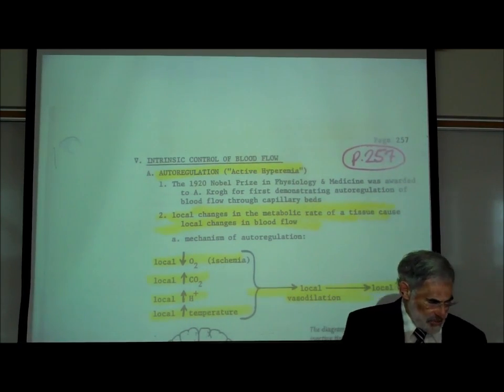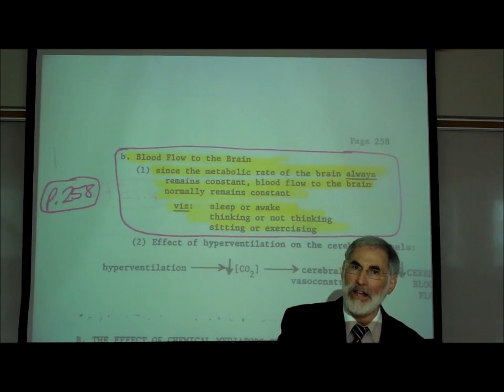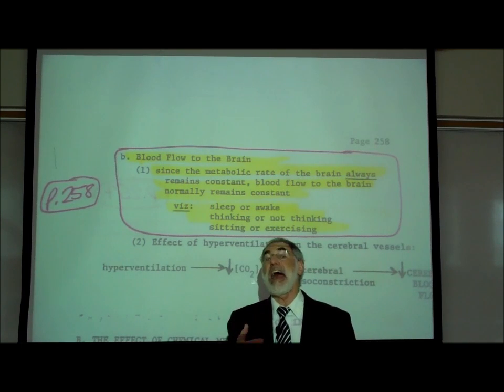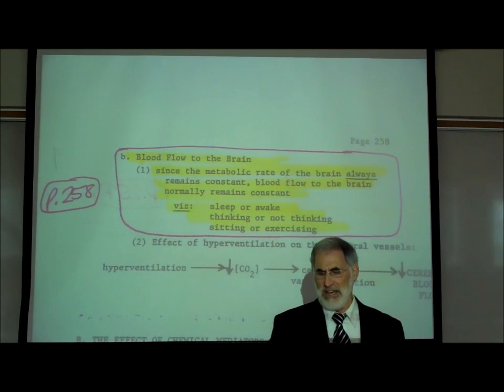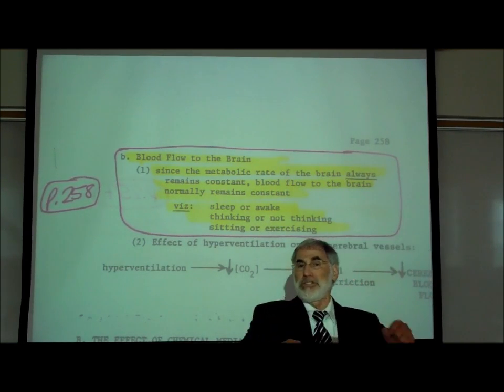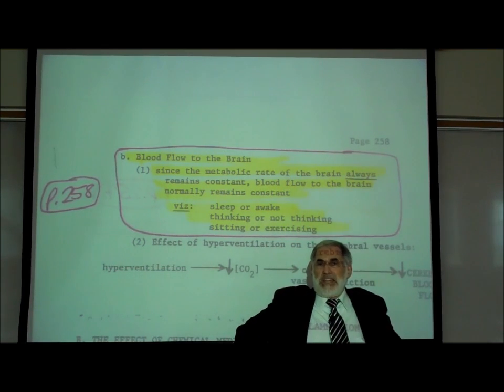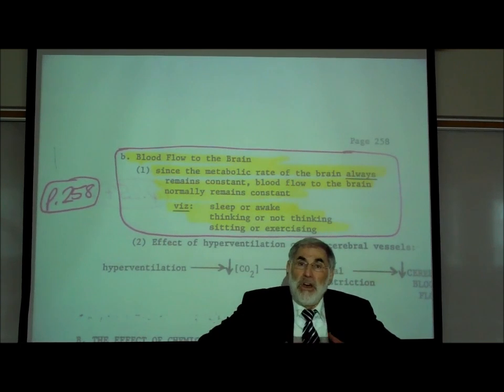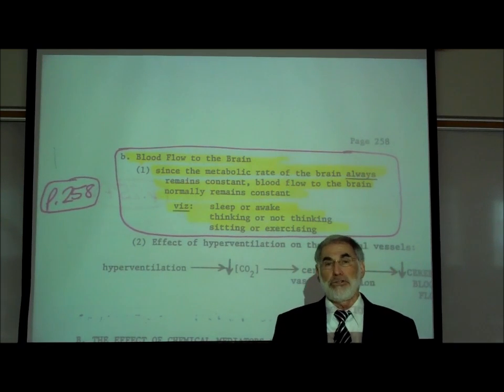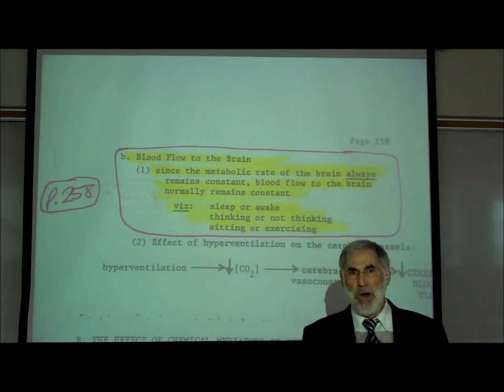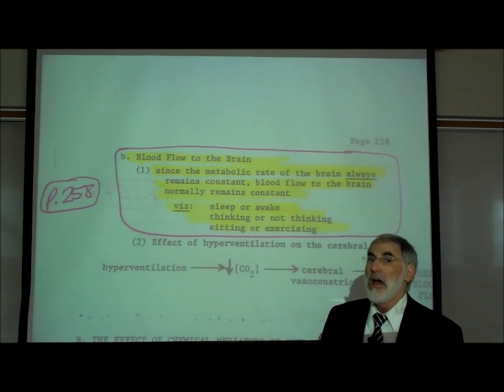If we look on the next page, page 258, we were just describing how increased metabolic rate of a tissue causes this active hyperemia phenomenon, increasing localized blood flow to that tissue. We could imagine muscular activity increases blood flow to the skeletal muscles. We might imagine that increased digestion of food after a meal would cause active hyperemia or increased blood flow to the digestive tract to promote or facilitate digestion of food and absorption of nutrients.